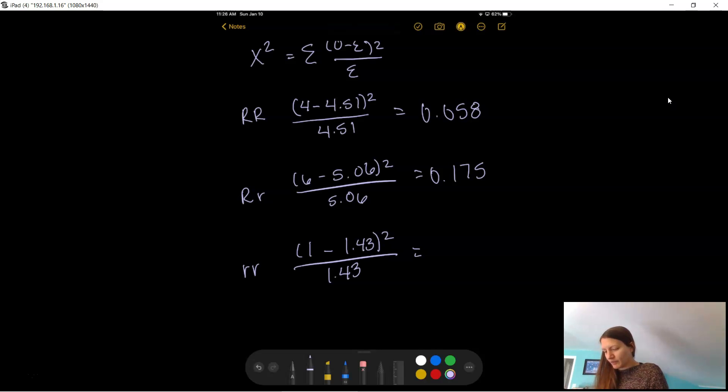And then lastly, 1 minus 1.43 squared, divide by 1.43, gives me 0.129. So what you just solved was this part of the equation. You did the observed minus expected squared divided by expected. But we still have another part of the equation, which is sigma. We still need to add all of our values together.